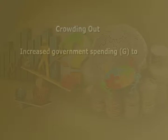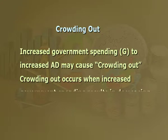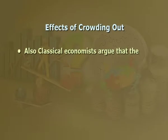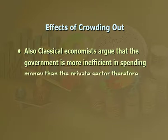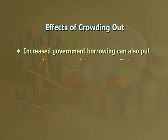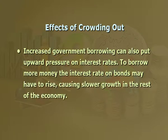Number fourteen: crowding out. Increased government spending to increase aggregate demand may cause crowding out. Crowding out occurs when increased government spending results in decreasing the size of the private sector. For example, if the government increases spending, it will have to increase taxes or sell bonds and borrow money — both methods reduce private consumption or investment, meaning aggregate demand may not increase or may increase only very slowly. Classical economists argue that the government is more inefficient in spending money than the private sector, leading to a decline in economic welfare. Increased government borrowing can also put upward pressure on interest rates, causing slower growth in the rest of the economy.